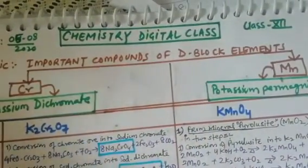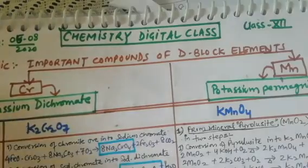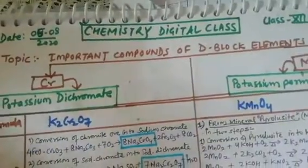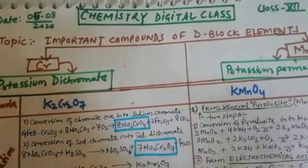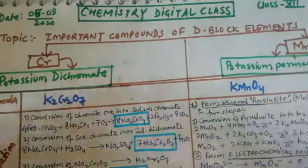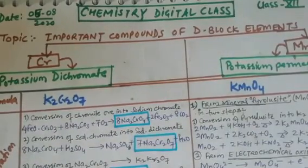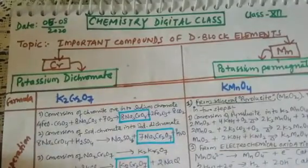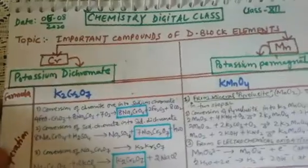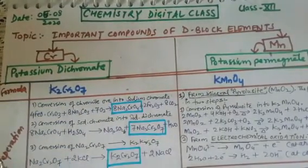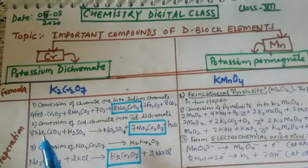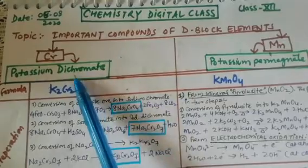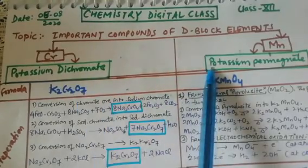There are basically two important compounds of d-block elements: the compound of chromium and the compound of manganese. The chapter is small but very important. Most questions are logical and reasoning type, but one question that most often comes can be from these two compounds. So let's understand potassium dichromate and potassium permanganate.